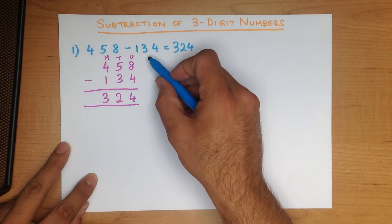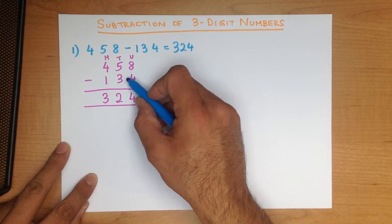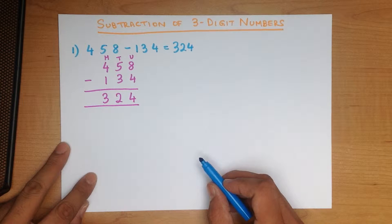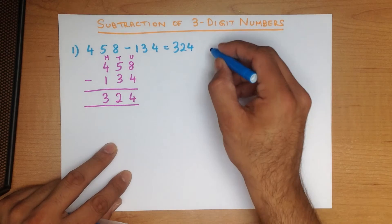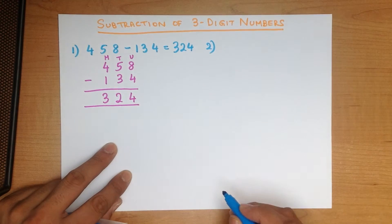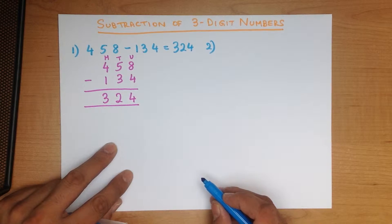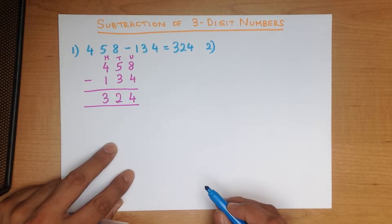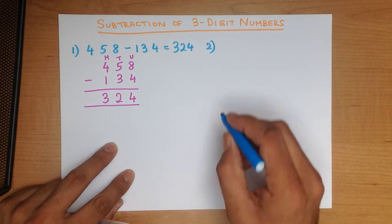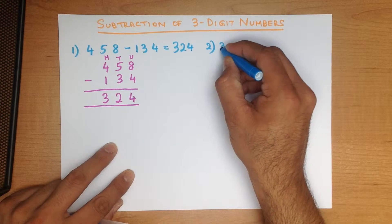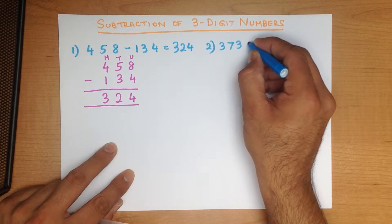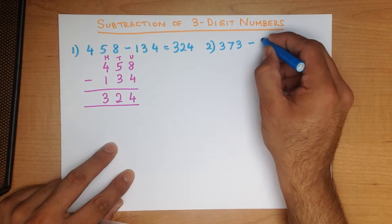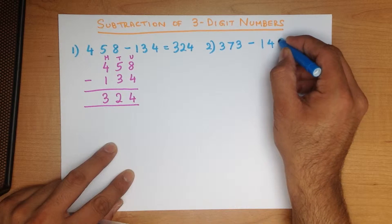So once we write these numbers down in the vertical format, it's a lot easier to work out. Now we are going to move on to the next question, which is going to involve carrying. What is 373 minus 148?